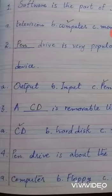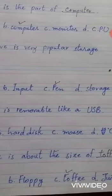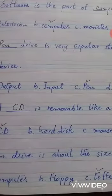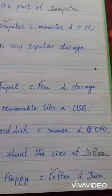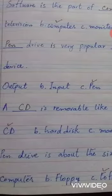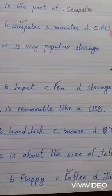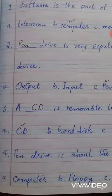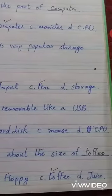Options are output, input, pen, storage. Answer is pen. Number three: a dash is removable like a USB. Options are CD, hard disk, mouse, CPU. Answer is CD. Number four: pen drive is about the size of dash.